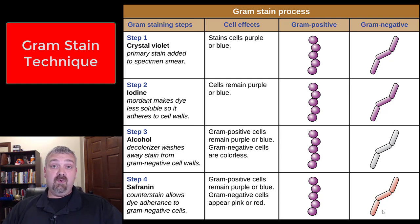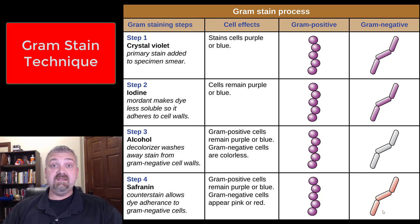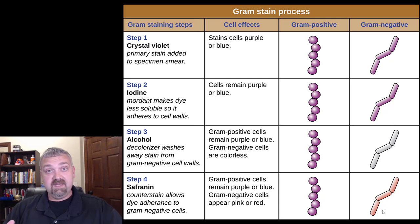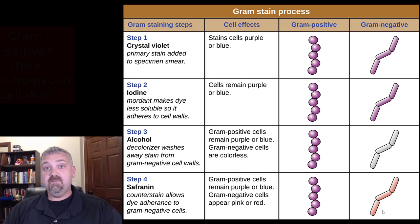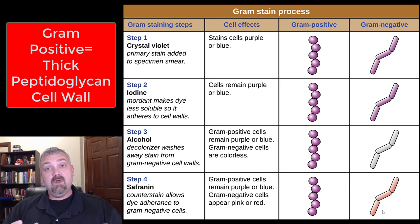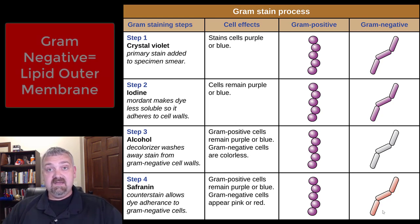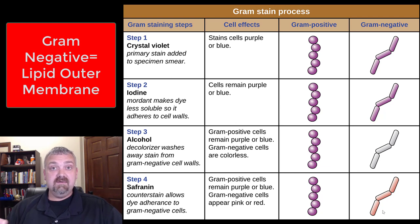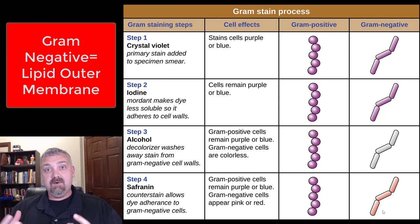The reason this is so important is because it tells us, foremost for bacteria, what we need to know about their cell walls. Gram positive cells have really big, thick peptidoglycan cell walls. Gram negative cells have a really thin cell wall, but outside of it they have a lipid outer membrane that has a toxin in it called lipid A.